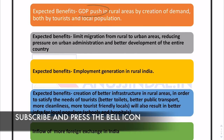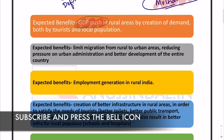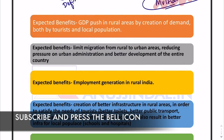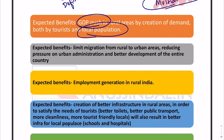The first expected benefit is GDP push — a GDP push in rural areas by creation of demand. That is the most obvious benefit: when tourists or local population decide to spend their money in rural areas for tourism purposes, it directly gives a push to gross domestic product in those areas and also gives a push to incomes of people, in turn creating more demand.